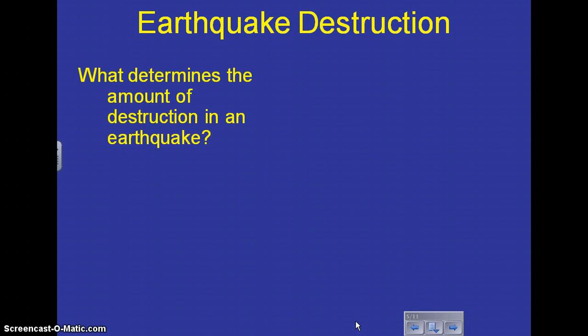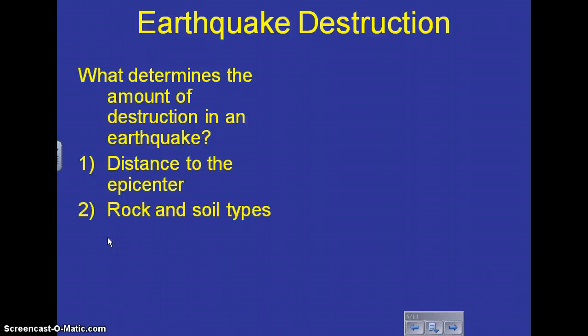There is a lot of destruction that happens with an earthquake. The amount of destruction depends on several things. One of them is the distance to the epicenter. The epicenter is a place where the energy is released for the earthquake, where the motion is happening. Sometimes the rock and soil types affect the amount of destruction too. If the rock is softer, or the soil is softer, it will cause it to move a lot more with the shaking. Building types affect the destruction too, because if a building isn't built sturdy, it will fall apart easier during an earthquake.